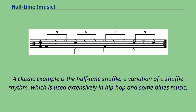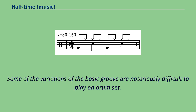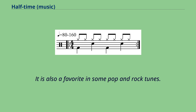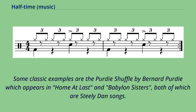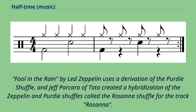A classic example is the halftime shuffle — a variation of a shuffle rhythm used extensively in hip-hop and some blues music. Some variations of the basic groove are notoriously difficult to play on drum set, and it is also a favorite in some pop and rock tunes. Classic examples include the Purdy Shuffle by Bernard Purdy, which appears in 'Home at Last' and 'Babylon Sisters,' both Steely Dan songs. 'Fool in the Rain' by Led Zeppelin uses a derivation of the Purdy Shuffle, and Jeff Porcaro of Toto created a hybridization of the Zeppelin and Purdy Shuffles called the Rosanna Shuffle for the track 'Rosanna.'